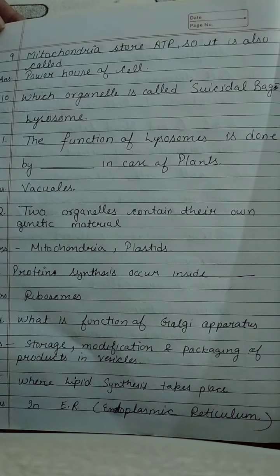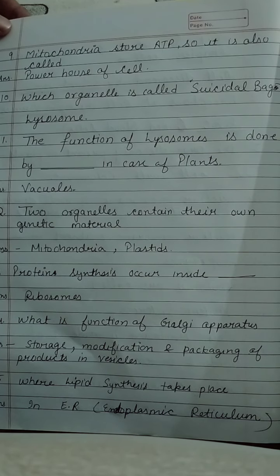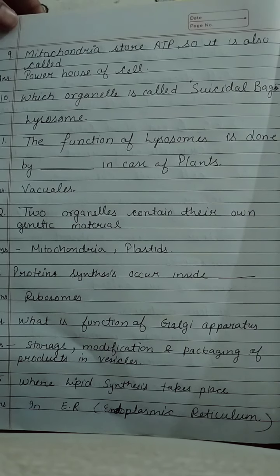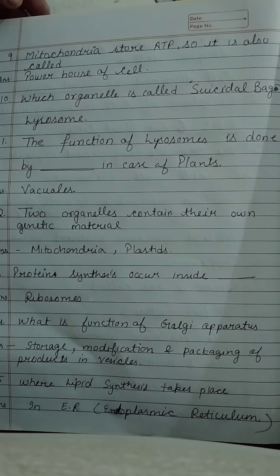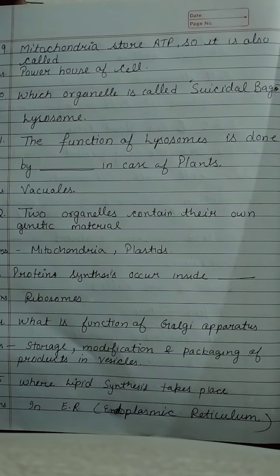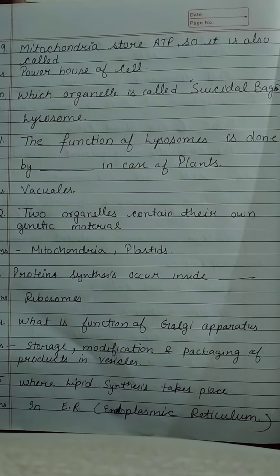Which organelle is called the suicidal bag? That is the lysosome. Why is it called the suicidal bag? Because the lysosome contains so many hydrolytic enzymes which degrade the complete cell when the wall of the lysosome is broken down.